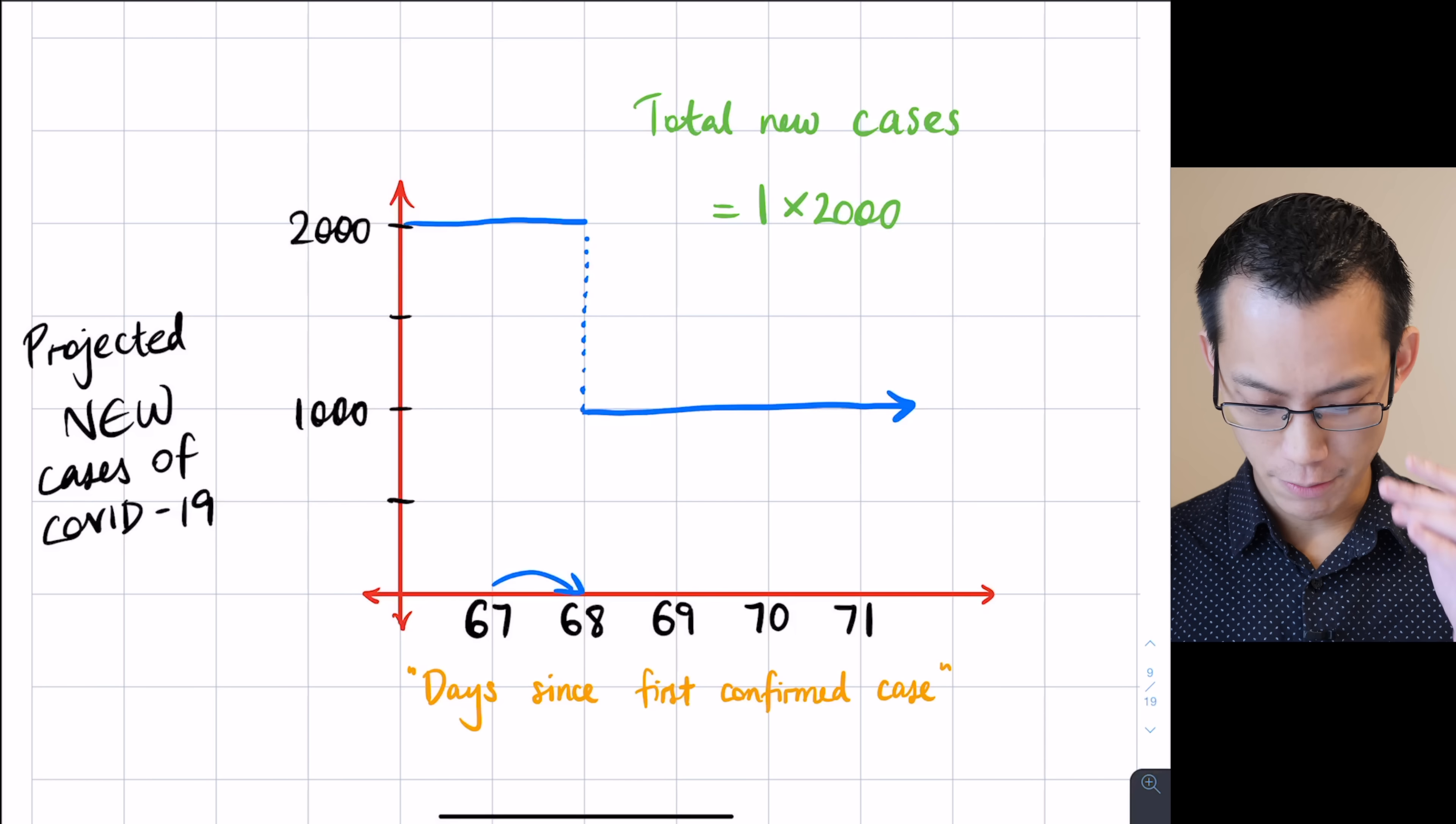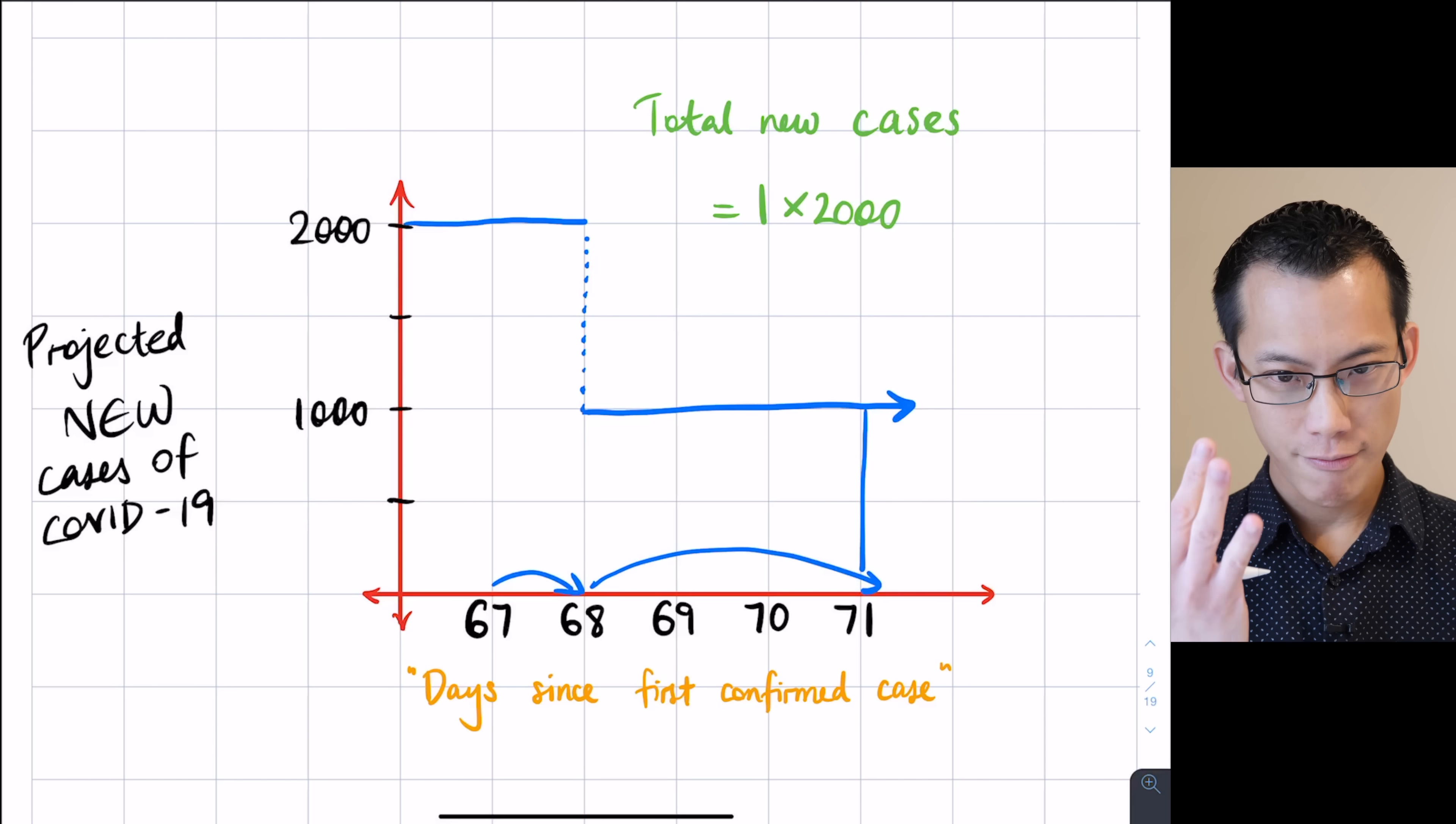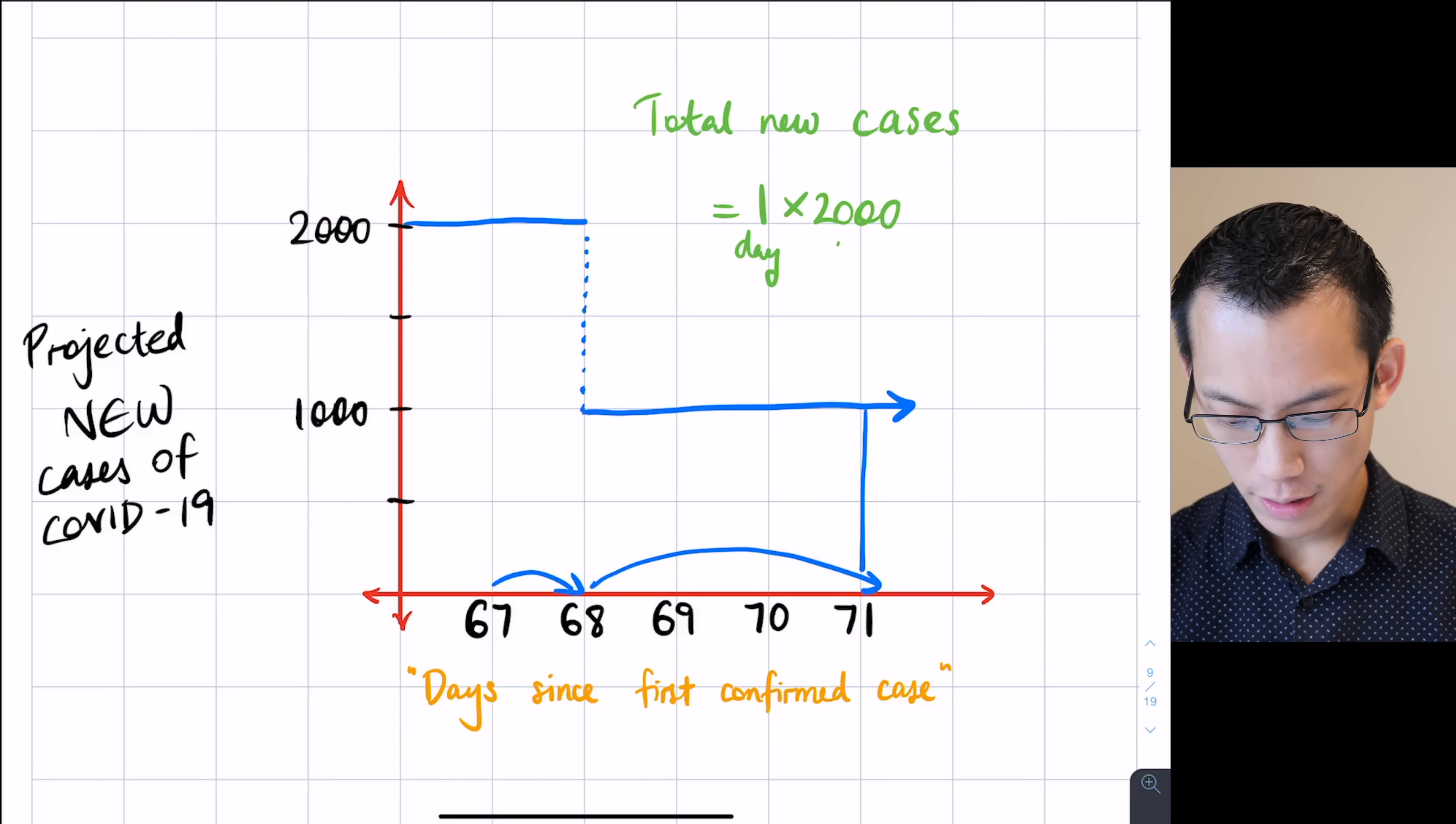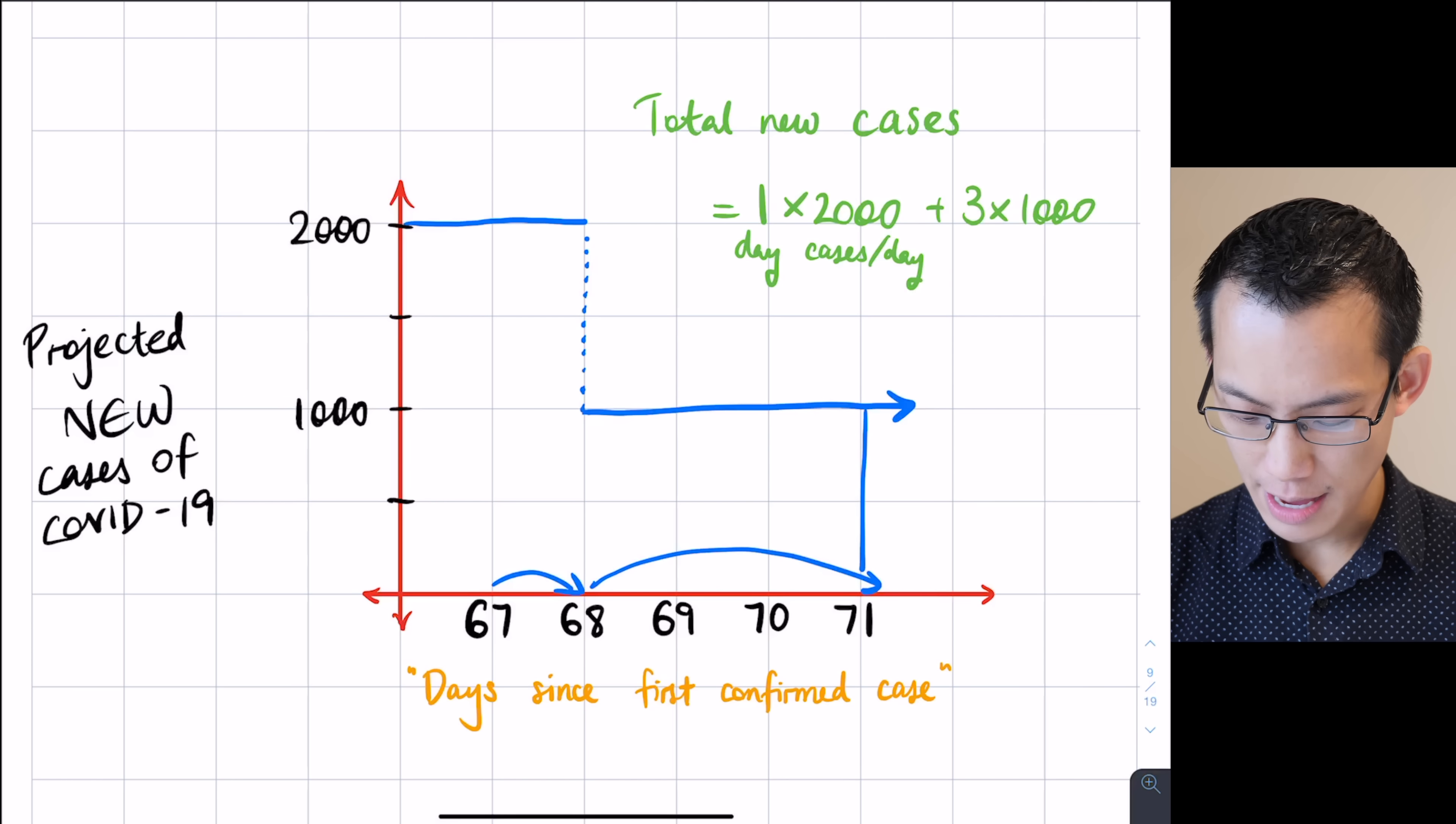But then there's this new part of it. As I go from day 68 to 71 across here and then I stop there. Sorry, my arrow's gone just slightly too far. Here I've got three days that pass and then there's a new rate at which new cases are diagnosed. Three days and each day, just like you told me, there's a thousand new cases diagnosed. So I'm going to add on to that one lot of 2,000, one day with 2,000 cases per day.